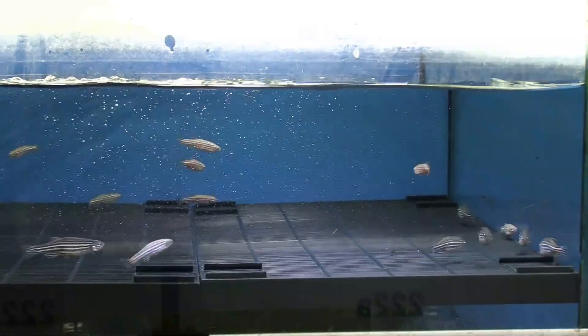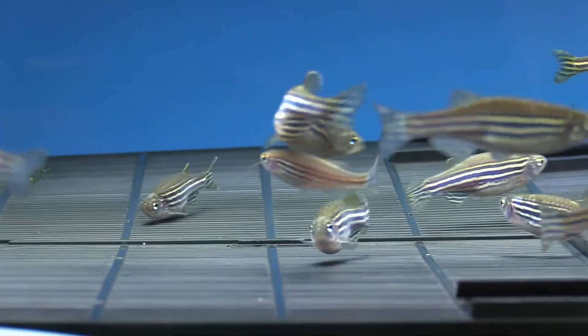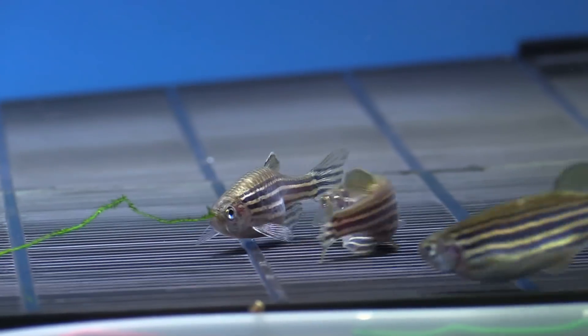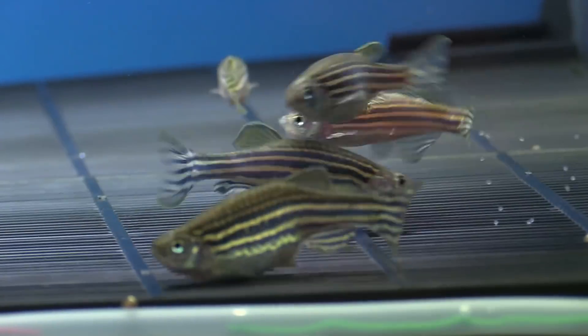Zebra fish reproduction depends strongly on photoperiod. Mating is initiated at the onset of light, and spawning typically takes place over a short period thereafter. Zebra fish can occasionally breed throughout the day.